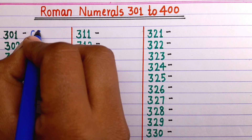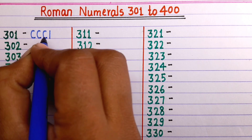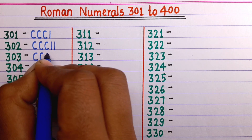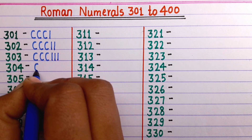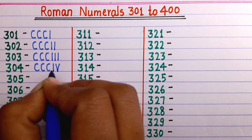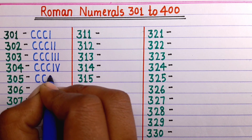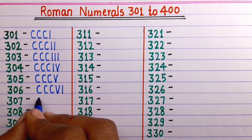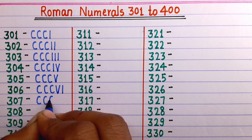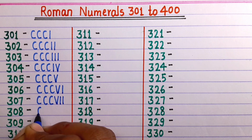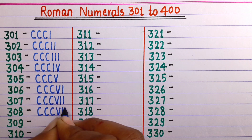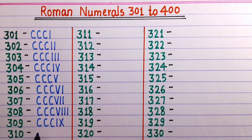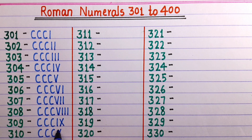301 is CCCI. 302 is CCCII. 303 is CCCIII. 304 is CCCIV. 305 is CCCV. 306 is CCCVI. 307 is CCCVII. 308 is CCCVIII. 309 is CCCIX. 310 is CCCX.